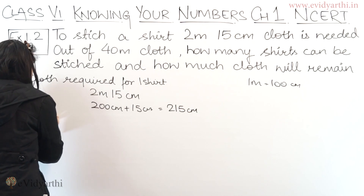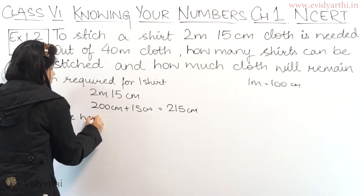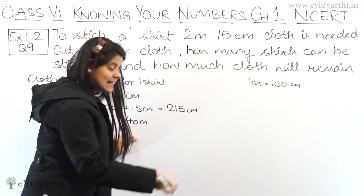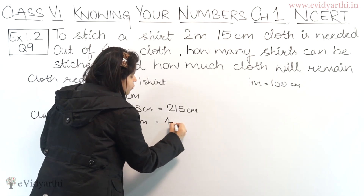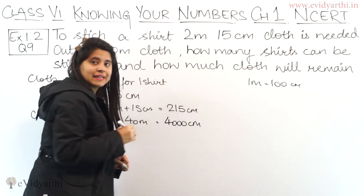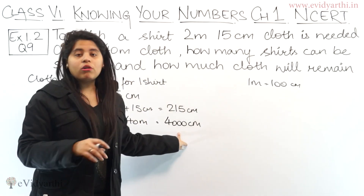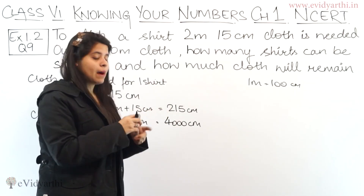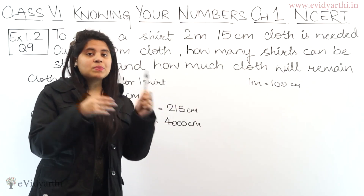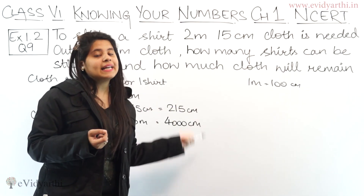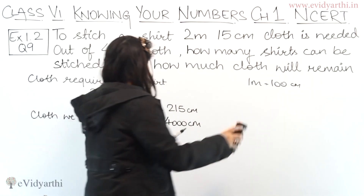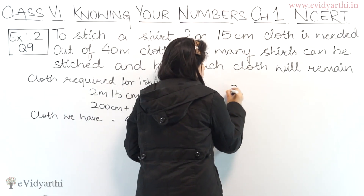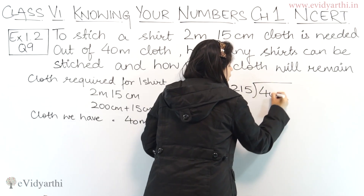Now, the cloth we have is 40 meters. We need to convert 40m to centimeters. 40 into 100 equals 4000cm. Then we have to divide the total cloth by the cloth per shirt. So we have to divide 4000 by 215.